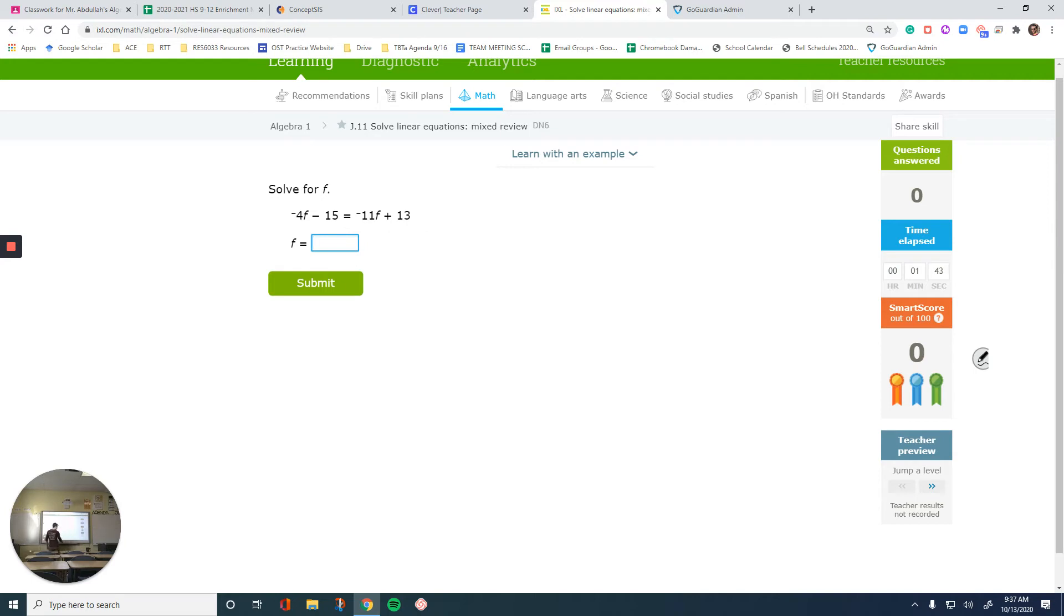So negative 4f and negative 11f over here are like terms. I want to first combine the variables. Numbers are like terms too, but I just want to focus on these two first. Negative 4f minus 15 equals 11. Is that negative? Yes.